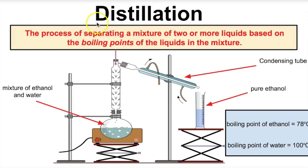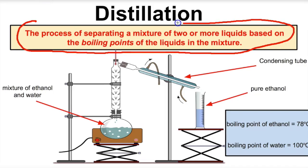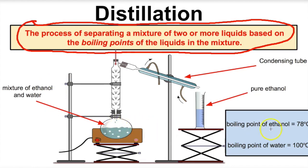The next way to separate the components of a mixture is called distillation. Distillation is the process of separating a mixture of two or more liquids based on the boiling points of those liquids. You can also use distillation to separate the components of a mixture that contains a solid and a liquid. Here we have a Florence flask with a mixture of ethanol and water. Ethanol is the type of alcohol used in wine and spirits. The boiling point of ethanol is 78 degrees Celsius, while the boiling point of water is 100 degrees Celsius.